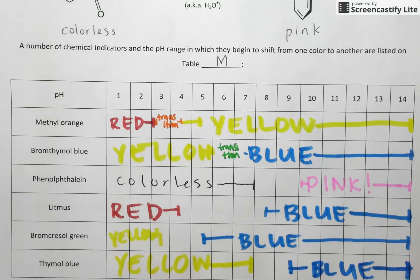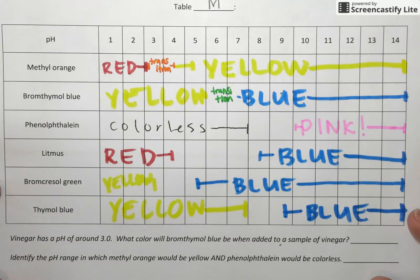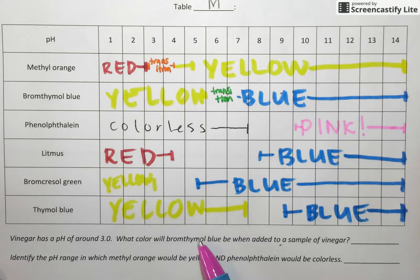And we can use these color change ranges to help us figure out exactly what predictions we might make for indicator color or just for what pH we have on our hands. So if you take a look at these two examples at the bottom of the page, vinegar has a pH of about 3.0. If I add a drop of bromthymol blue to a sample of vinegar, I want to know what color it's going to be. Well, we can use our table here to help us or again, just look at table M.